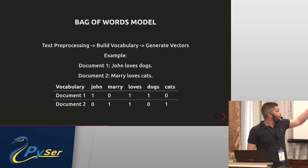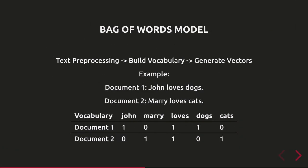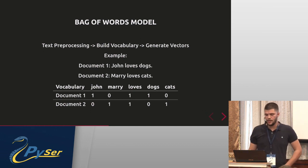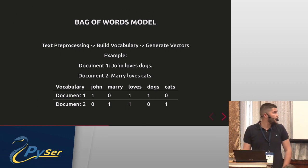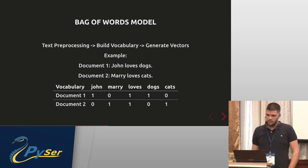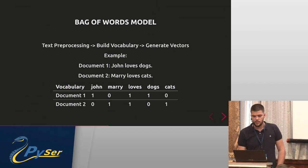The Bag of Words model is extremely simple and has three steps: text pre-processing, building vocabulary, and generating vectors. Assume we have two documents — we take all distinct words from the whole corpus and build a vocabulary. If a word is present in the document we put 1, if not, 0. This vectorized representation is feasible for machine learning algorithms. The problem with Bag of Words is that it cannot capture context, and word order in the sentence doesn't matter.